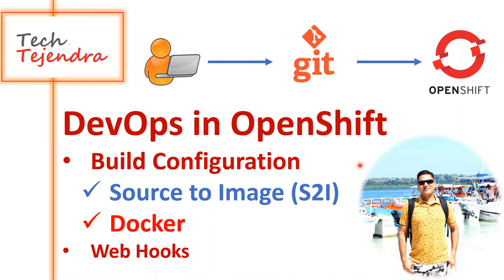To understand this pipeline, we need to understand the build concept of OpenShift. We have Build Configurations, also known as BC, in OpenShift. This build configuration has two types of strategies. One is called Source-to-Image (S2I), which is the very famous build strategy in OpenShift. The other strategy is the Dockerfile strategy, where the programmer writes their own Dockerfile stored in Git along with the code. OpenShift reads this Dockerfile and prepares the image. We will also discuss how to set up the webhook between Git and OpenShift.